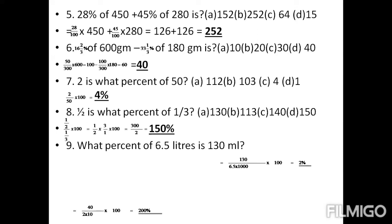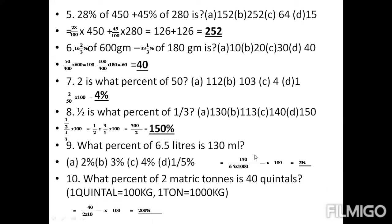Question number 9: what percentage of 6.5 liters is 130 milliliters? We calculate 130 divided by 6.5 into 1000 into 100 to get the answer. Question number 10: what percentage of 2 metric tons is 40 quintals? One quintal equals 100 kg and one metric ton equals 1000 kg. So 40 divided by 2 into 10 into 100 gives 200%.